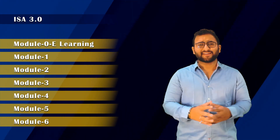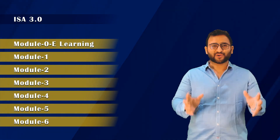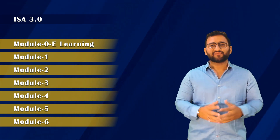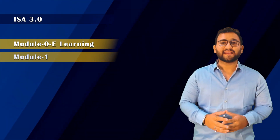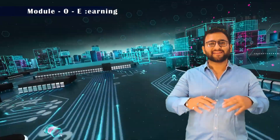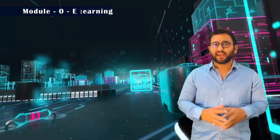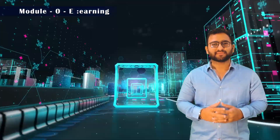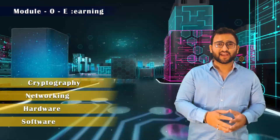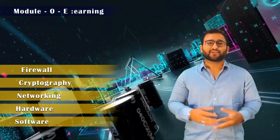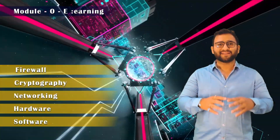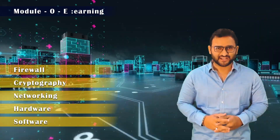Now let's discuss how to study these 7 modules. First, we will start with Module 0, which is E-learning. Here you will learn basic technology that will help you complete the course — what is software, hardware, networking, cryptography, and how these systems work. You will gain a basic understanding of information technology.